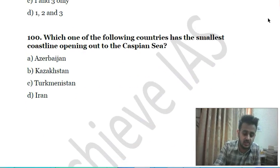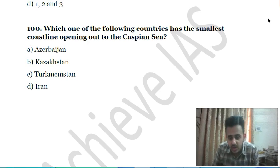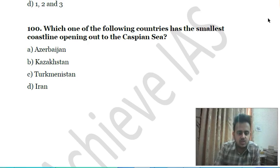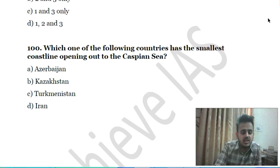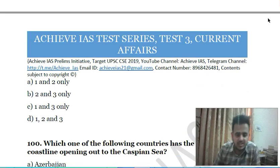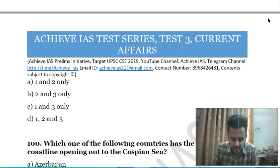Ninety-ninth/hundredth question: which one of the following countries has the smallest coastline opening out of the Caspian Sea? A) Azerbaijan, B) Kazakhstan, C) Turkmenistan, D) Iran. This is all about today's lecture and questions. Your next test will be tomorrow and will also be of current affairs.